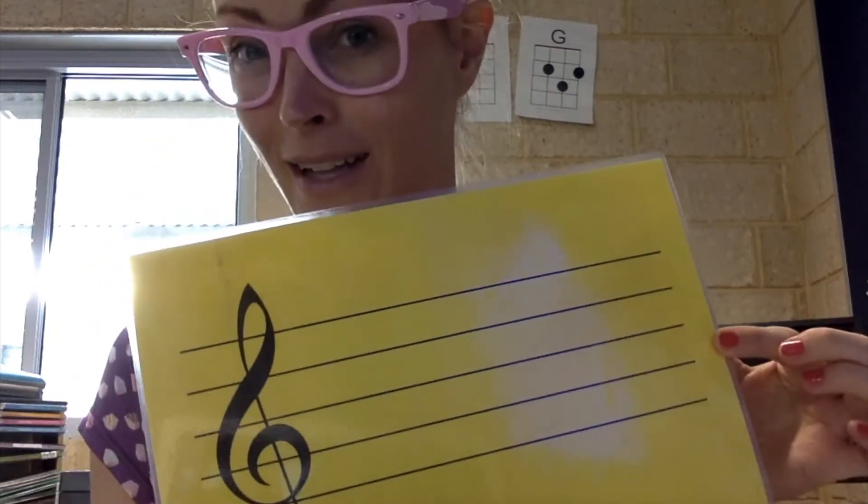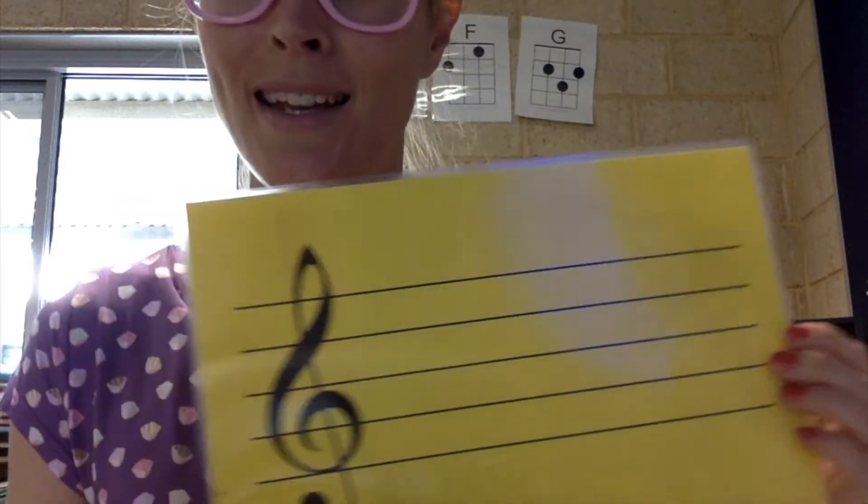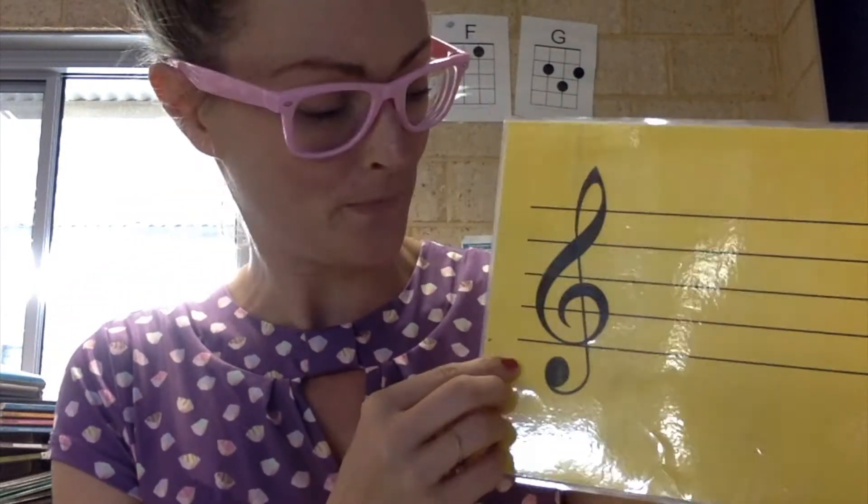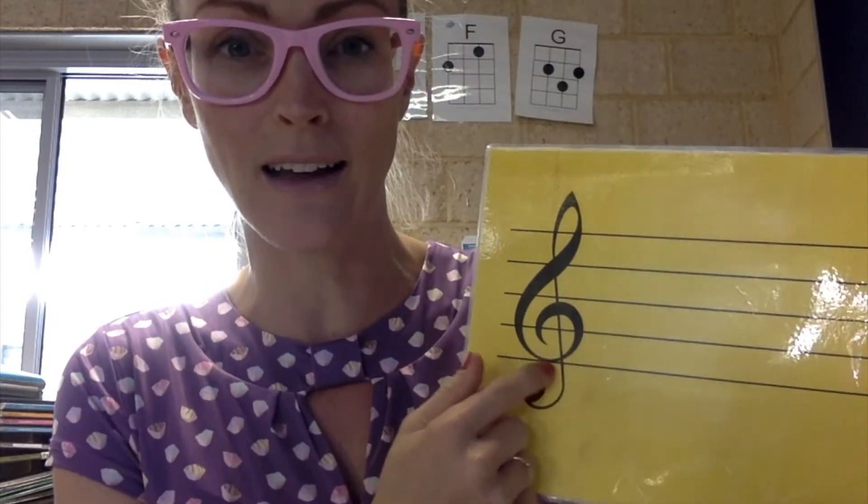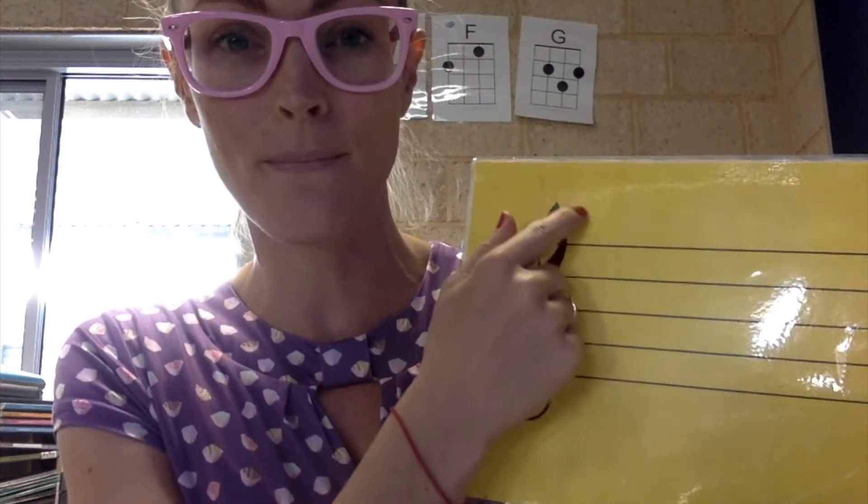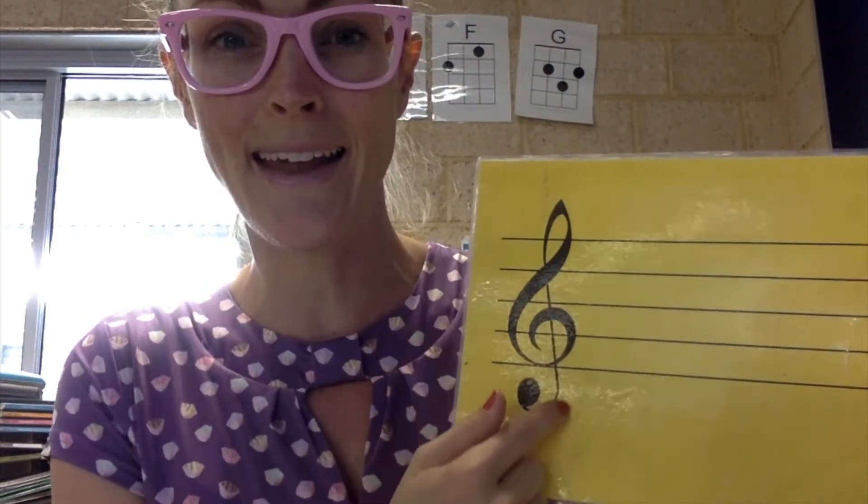We're going to make Play-Doh treble clefs. You know that the treble clef looks like this: starts with a spiral around the G line, comes up and down. I have to say though, I see some pretty creative versions when I look at kids' work, so we're going to get really good at it today.